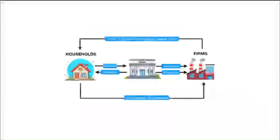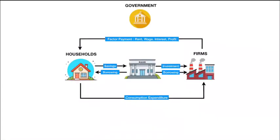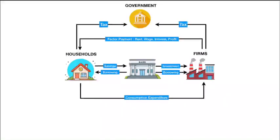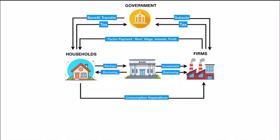Now, let us explore a little deeper. In practice, there is always a government in an economy, which we ignored in the last two examples for simplification. Now, the government collects tax from both households and firms, and in return, government sometimes provides subsidies or other benefits to the firms to help them in business. Similarly, the government provides benefit transfers through different schemes to the household sector.